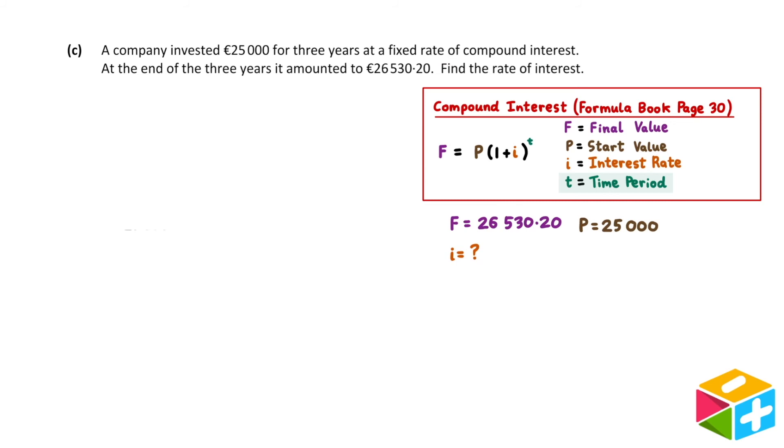T is the time period, and our company is investing for three years. So T is equal to 3. Now that we have the values for our letters, let's sub into the formula. Our goal is to find i. In other words, we need to isolate i all by itself on one side of the equation.